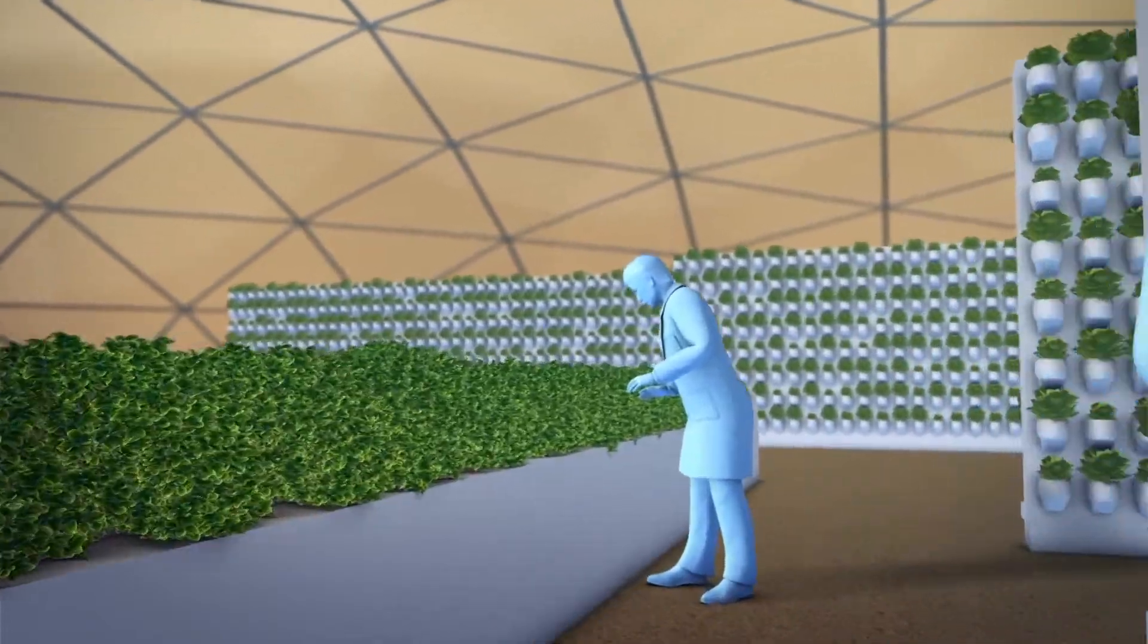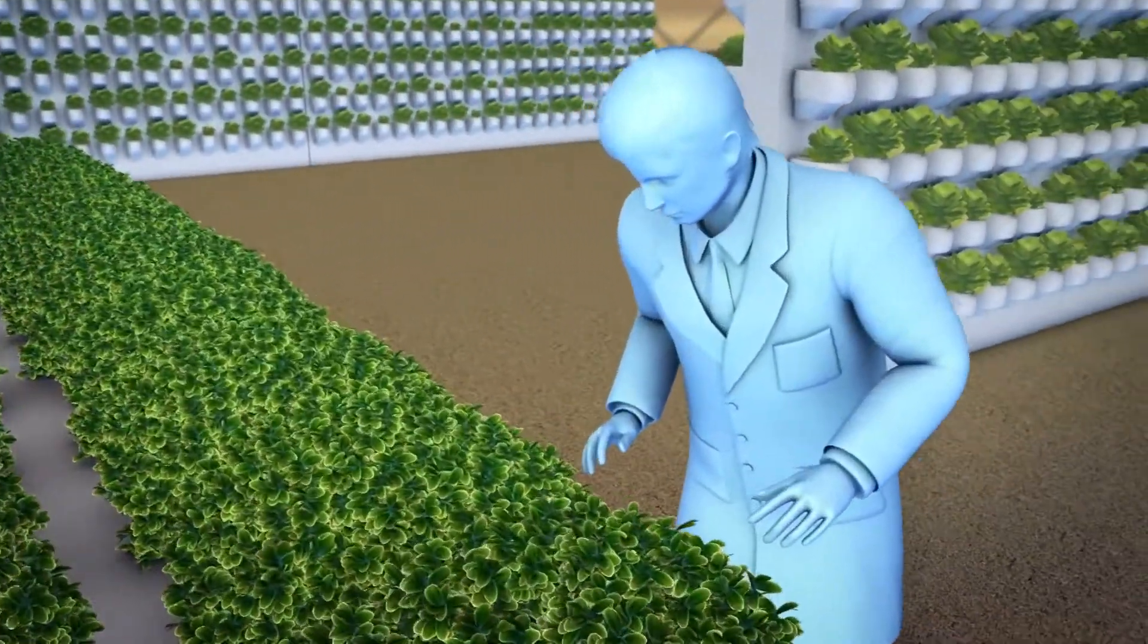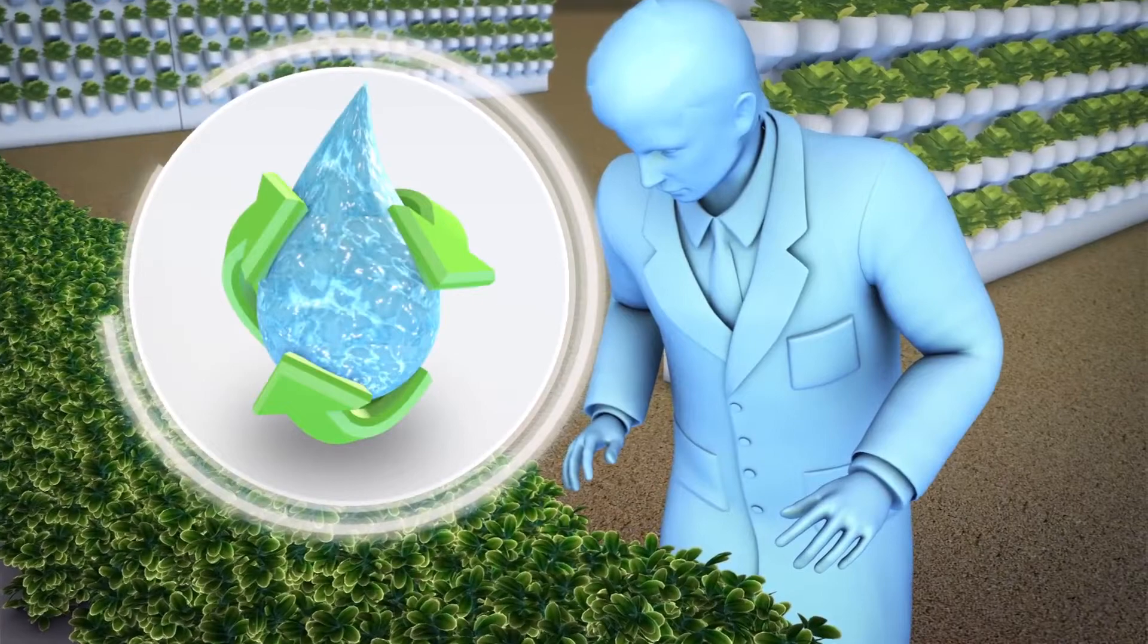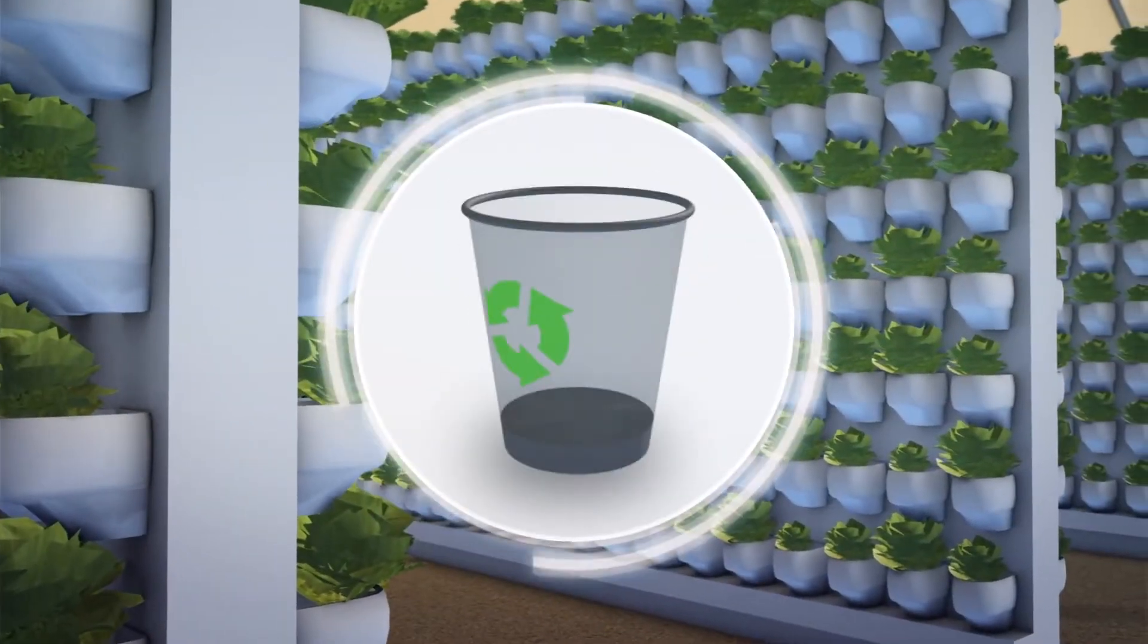Researchers will practice several methods of farming on light resources as Mars lacks water and nutritious soil. Waste and water recycling methods will also be tested.